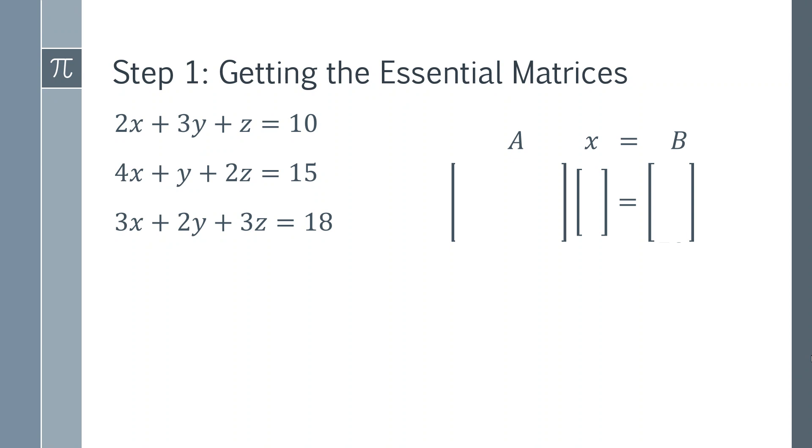So the first thing we need to do is look at the matrix A. That's going to be composed of all of the coefficients. For example we've got 2x plus 3y plus 1z, so we're going to have 2, 3, 1 on the top line. Then I just do the same thing for the second row and then the third row, just taking the coefficients.